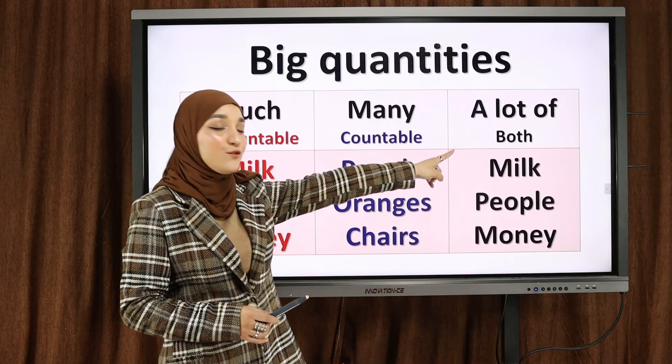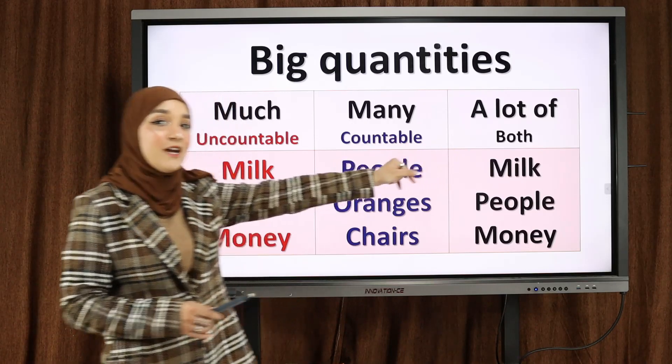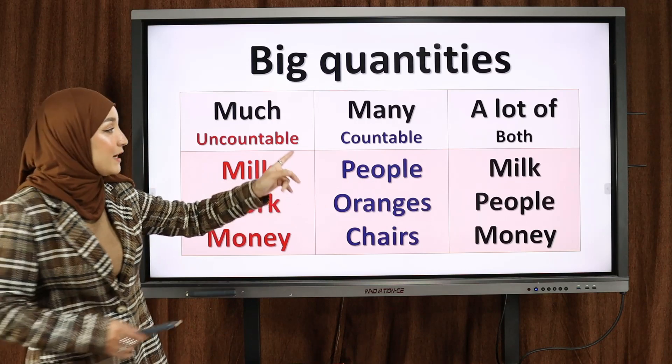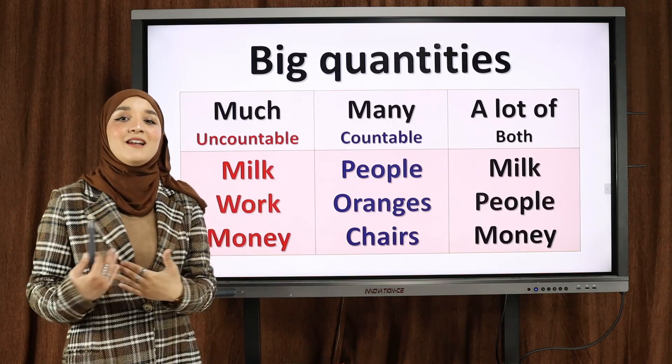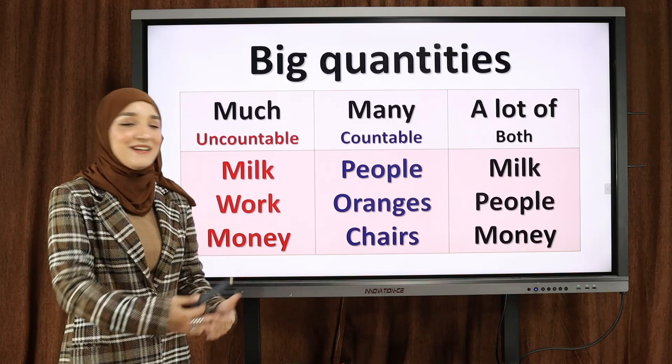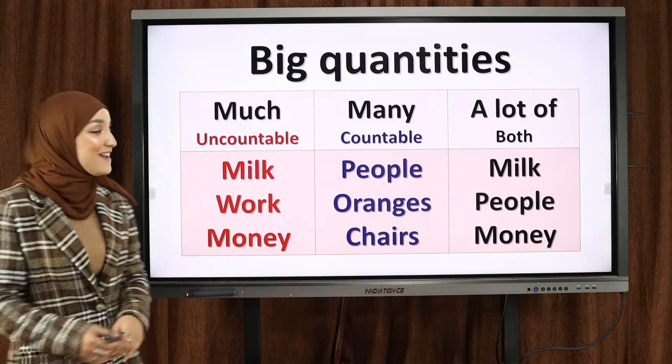Many — we use it to talk about countable nouns. Countable nouns are the opposite of uncountable — the things that we are able to count. الأشياء التي يمكننا أن نعدها، يمكننا أن نحسبها، and they have a plural form. A lot of is used with both — يمكننا أن نستعملها مع كلاهما.